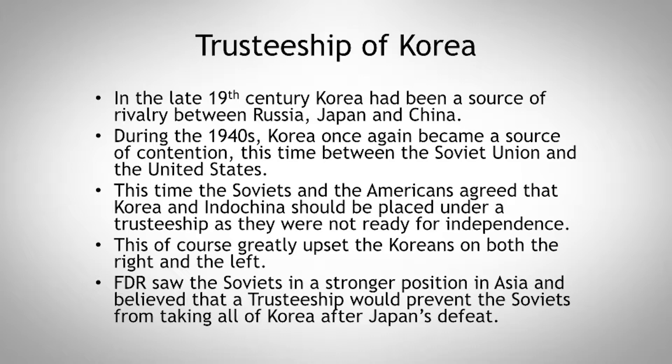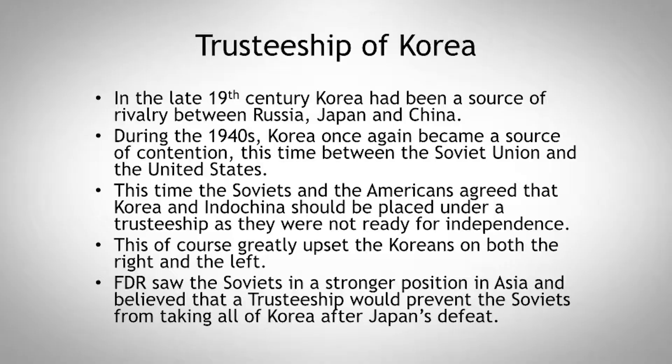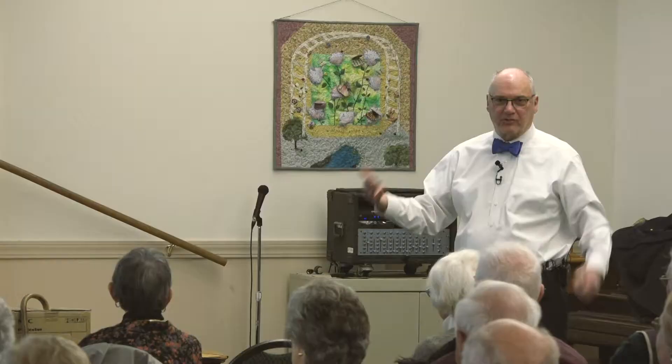Trusteeship of Korea: Korea had been a source of rivalry between Russia, Japan, and China during the late 19th century, and in the 1940s it again became a source of contention — this time between the Soviet Union and the United States. The Soviets and Americans agreed that Korea should be placed under trusteeship as it was not ready for independence, which upset both left and right Koreans. FDR saw the Soviets in a stronger position in Asia and believed a trusteeship would prevent the Soviets from taking over all of Korea after Japan's defeat.